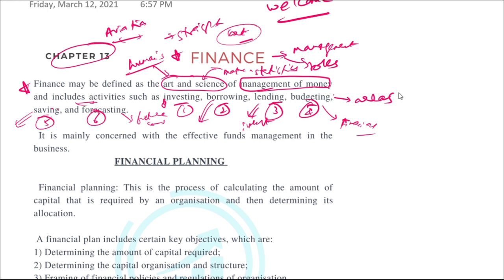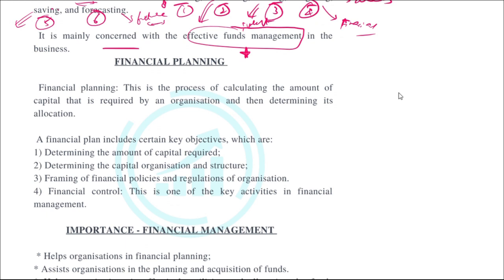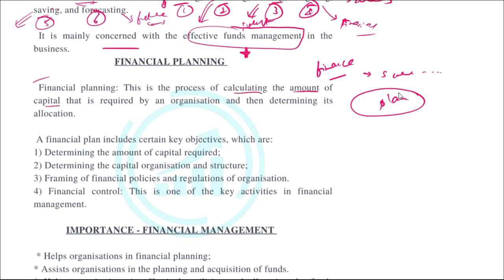In short, finance is mainly concerned with effective fund management in a business or organization. Since finance deals with forecasting, saving, and the current financial situation, there is a need for a financial plan. Financial planning is calculating the amount of capital required by an organization and then determining its allocation.